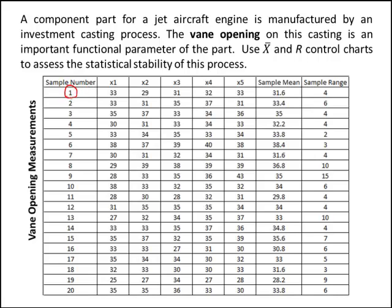So the first hour, let's say, you take a random sample of 5 parts from the production process and list those. Part 1 is 33, part 2 is 29 — these are the vane opening measurements — all the way up to x5, which is 33. The statistic of interest is the sample mean: we take these five observations, average them, and get 31.6. The sample range is the max minus the min of our subgroup. The max is 33 and the min is 29, so the sample range for this subgroup is 4.